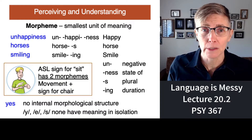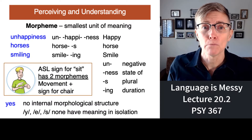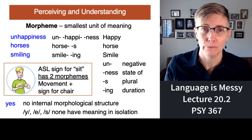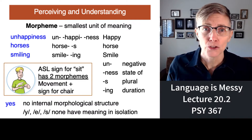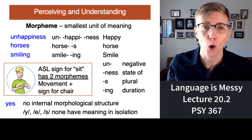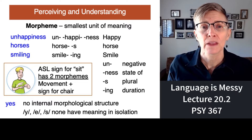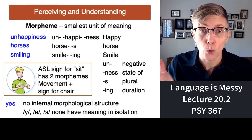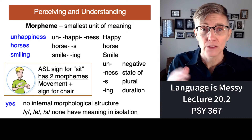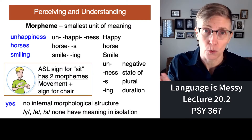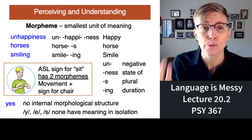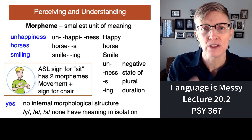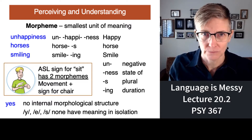The first building block is a morpheme — the smallest unit of meaning. For example, the word 'horses' has two morphemes: the word 'horse,' meaning a horse, and the letter S, which means plural. So 'horses' has two units of meaning, two morphemes.